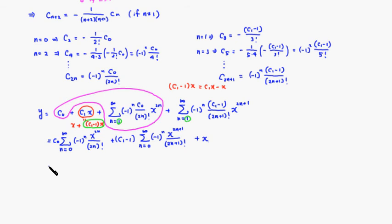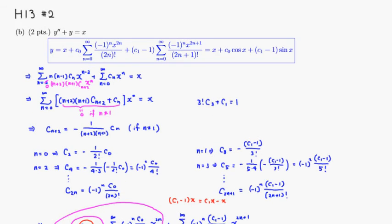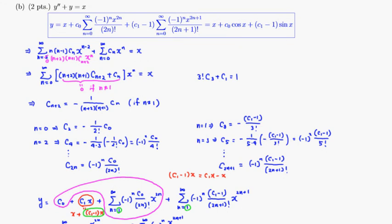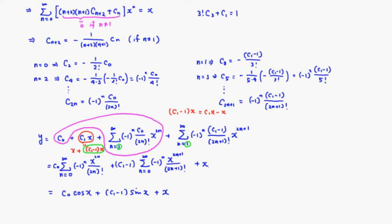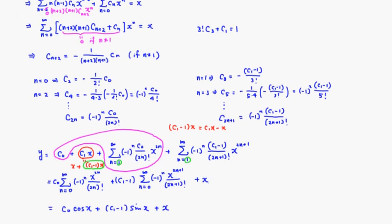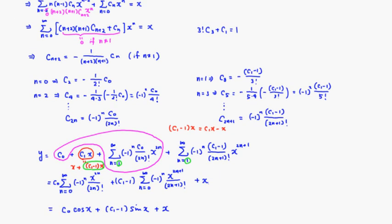Therefore the final answer is y equals c0 cosine x plus c1 minus 1 times sine x plus x. The c0 term is the cosine series, the c1 minus 1 term gives the sine series, and then there is a leftover x. That's the complete solution. I hope that was clear.